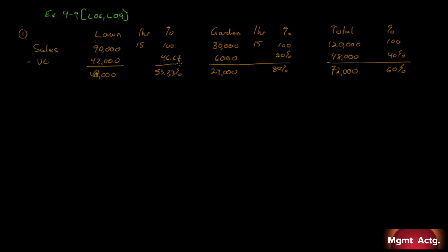Variable cost per hour is $7 for lawn and $3 for garden, as given in the question. Fixed costs are subtracted only from the total — I bring it all the way over to the total column. Fixed costs are $54,000, giving a net operating income of $18,000. So the answer to part one: the overall contribution margin ratio for the company is 60%.